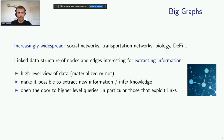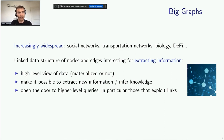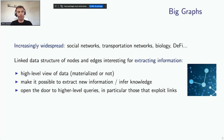Today we are witnessing unprecedented growth in interconnected data, and big graphs become increasingly widespread. We can find them in several areas, including decentralized finance. Big graphs are basically very large linked data structures of nodes and edges, which are especially interesting for extracting information. They present a high-level view of data, and they make it possible to extract new information, or even to infer new knowledge, opening the door to high-level queries that exploit links.